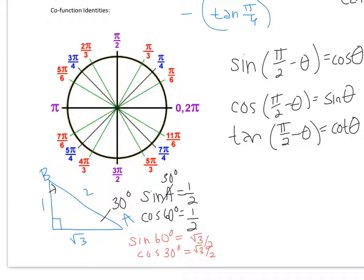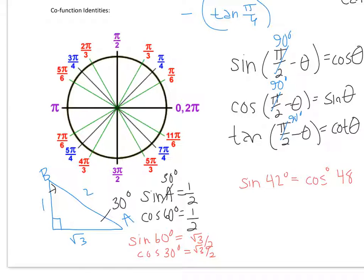So the sine of angle A is the same thing as the cosine of 90 degrees minus that angle. Instead of writing pi over 2, you can think of 90 degrees — it's the same thing, pi over 2 is 90 degrees. So the sine of 90 degrees minus the angle measure is the same thing as the cosine of theta. For example, the sine of 42 degrees is the same thing as the cosine of 48 degrees, because both of these add up to 90.